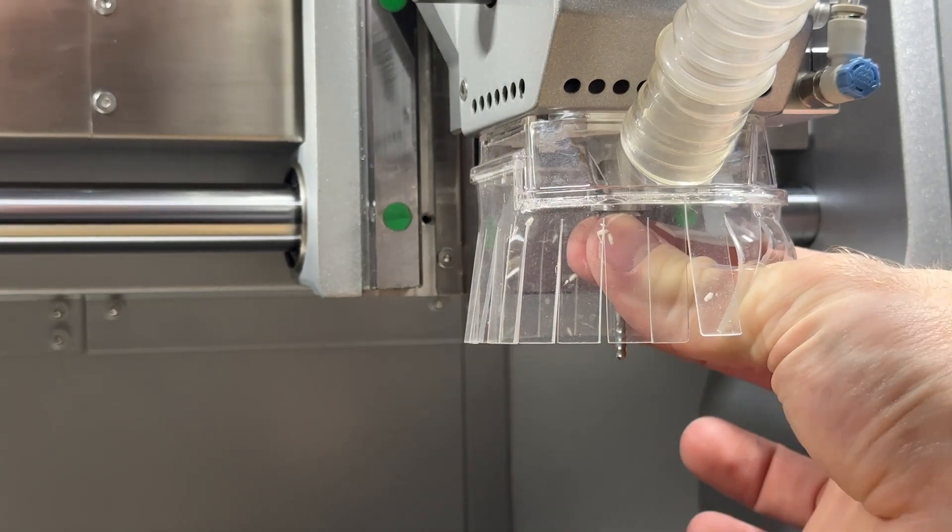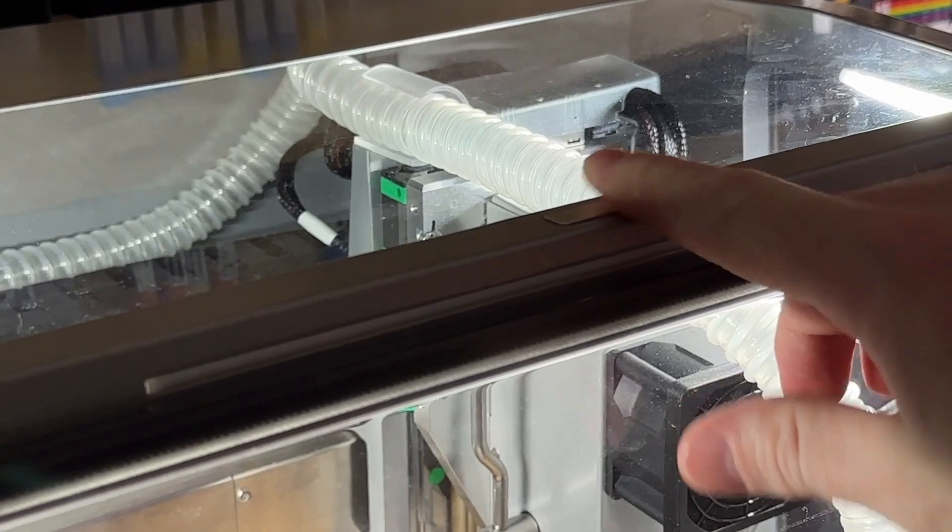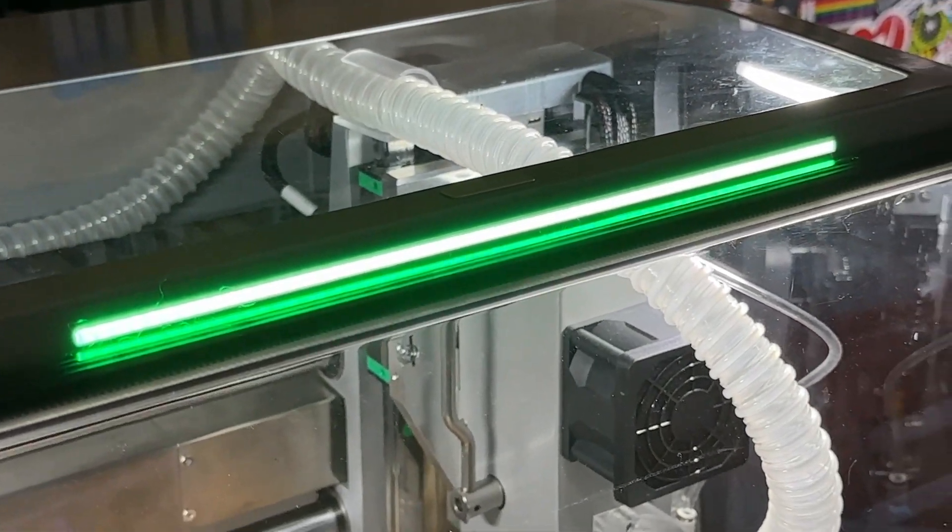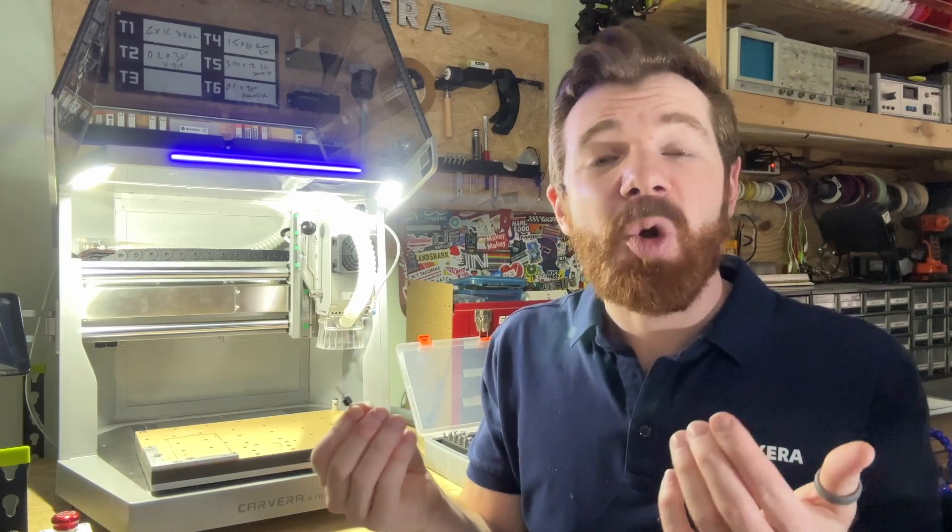Once you've changed your tool mid-job, you can confirm this change to continue manufacturing by either pressing the button on top of the Carvera Air or by continuing using the digital button shown in the controller app.